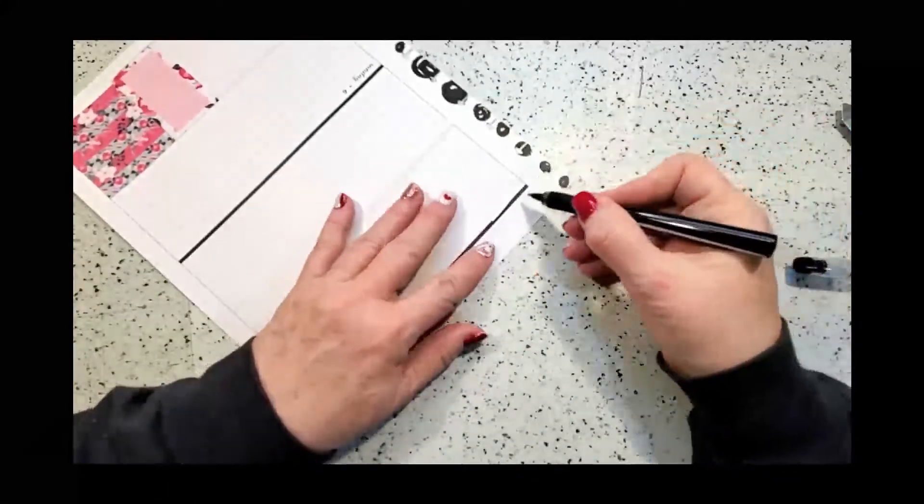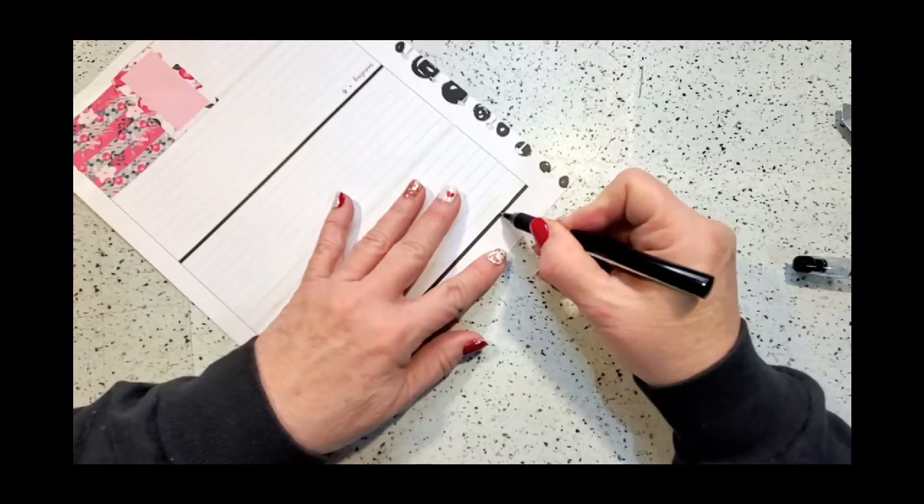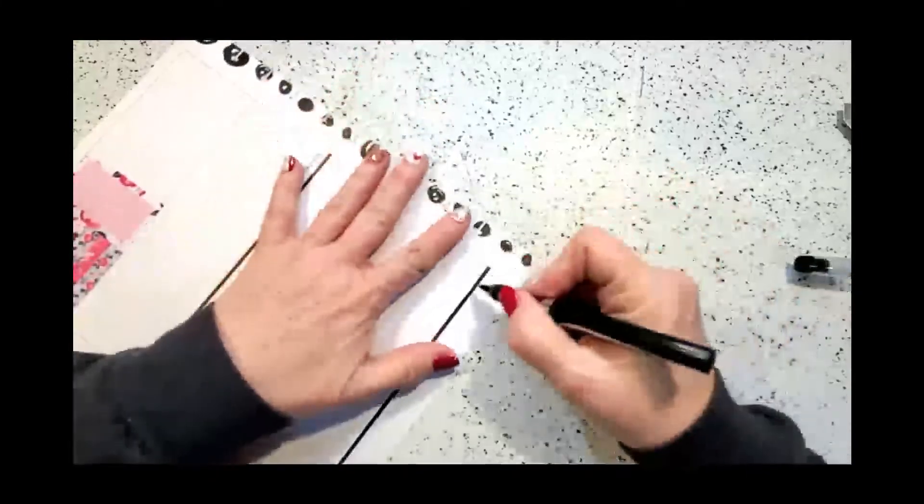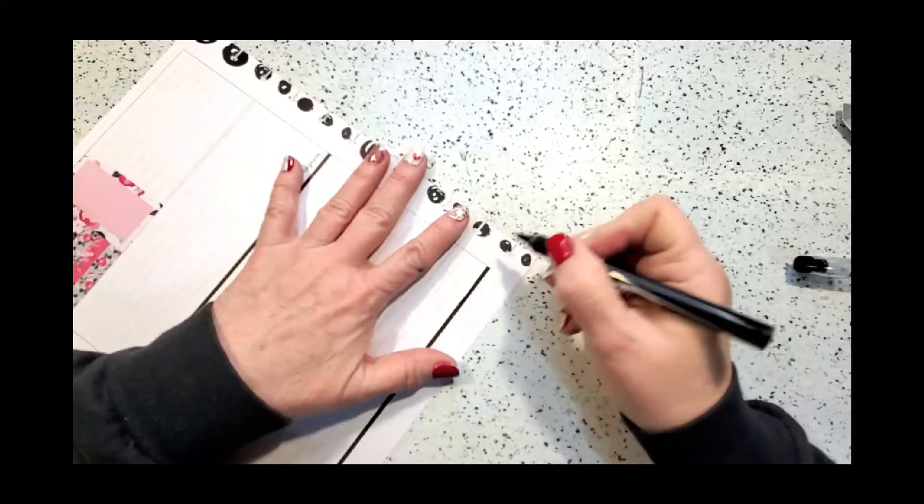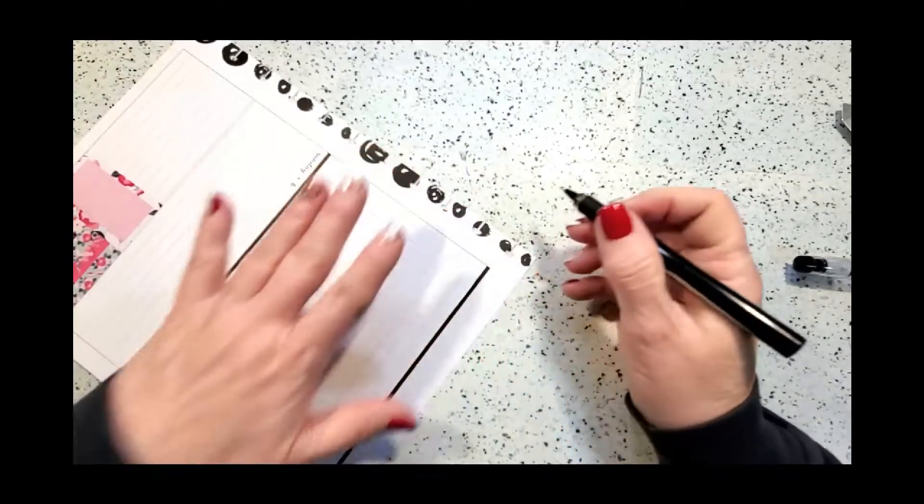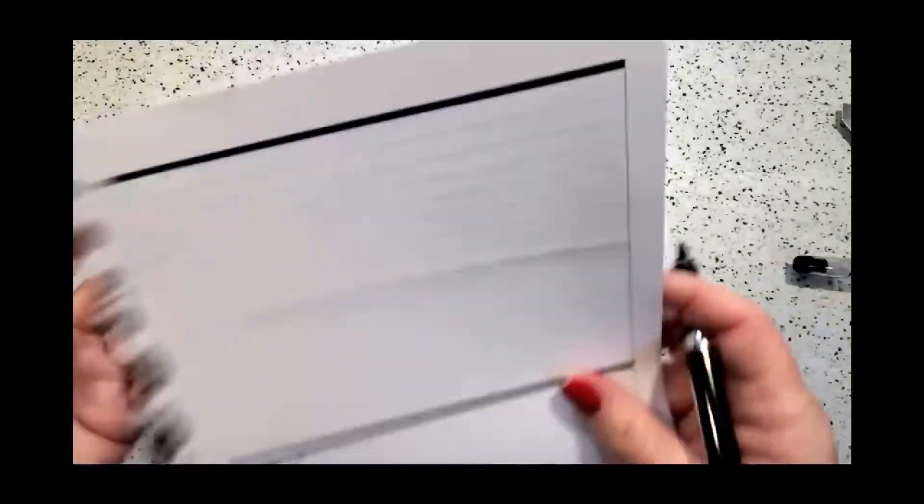Now this washi tape went over the black a little bit, so I'm just going to take this. Really, I love the way this pen writes. It's really cheap. It's a dollar store find. But I'll be honest, it does shadow or bleed through, but it's going to be black on black so I think it'll be fine. And now it looks like there's no extra tape on it.